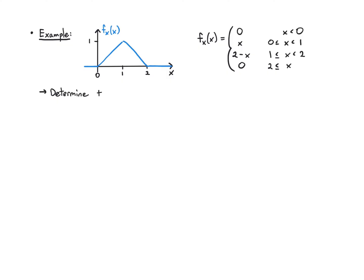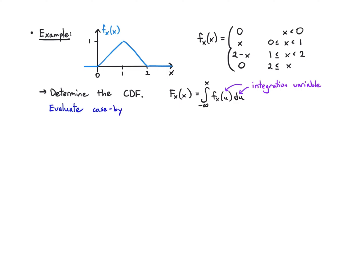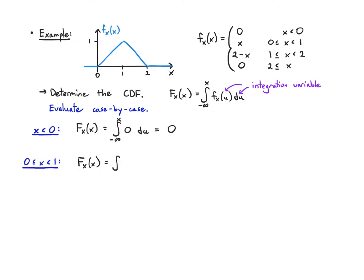First, we'll work out the CDF using F(x) = integral of the pdf up to x, case by case. For x < 0, the CDF is just 0. For 0 ≤ x ≤ 1, we integrate from minus infinity to 0 getting 0, then from 0 to x we integrate u du (since f(u) = u), giving us (1/2)u² from 0 to x, which is (1/2)x².